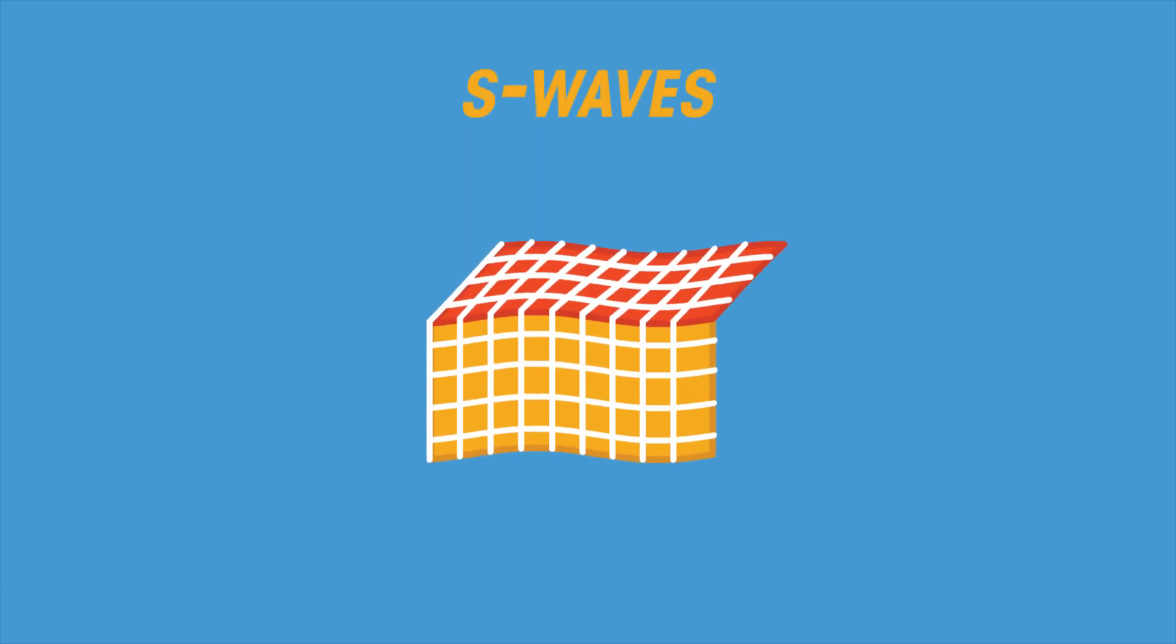S-waves. These slower waves arrive after the P-waves, and so are called secondary waves or shear waves. S-waves cause an up and down motion. They travel through solid, but not liquid.